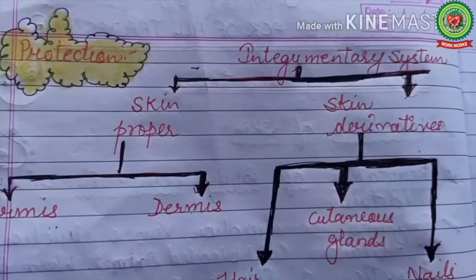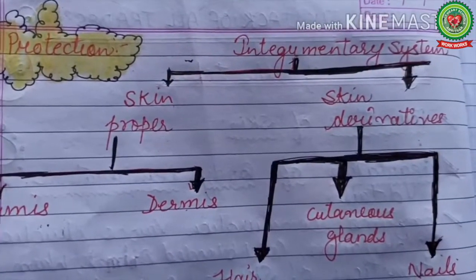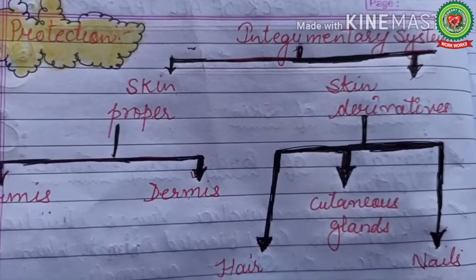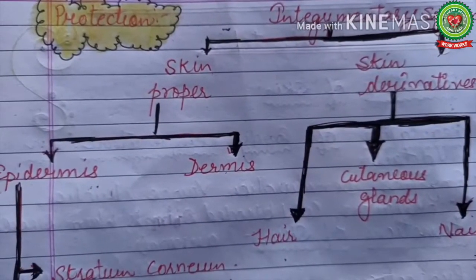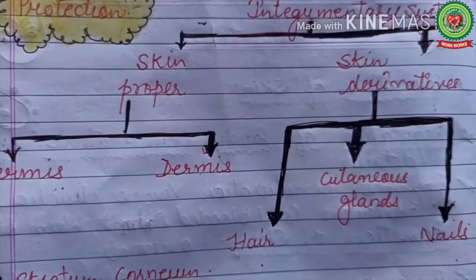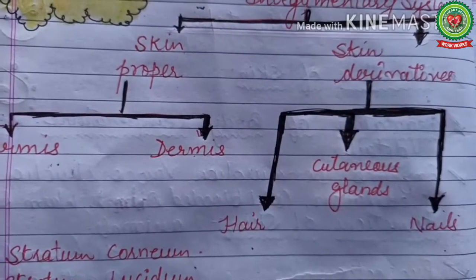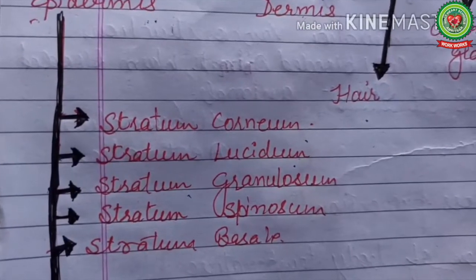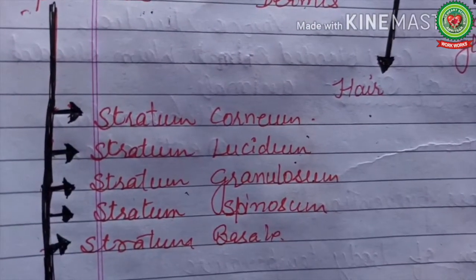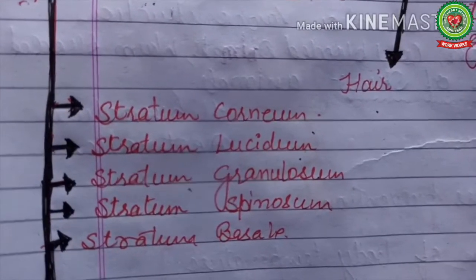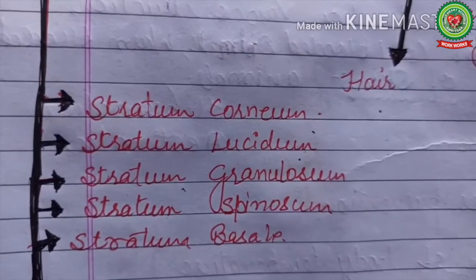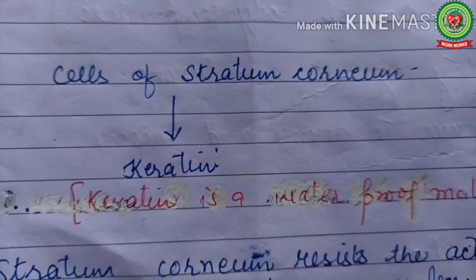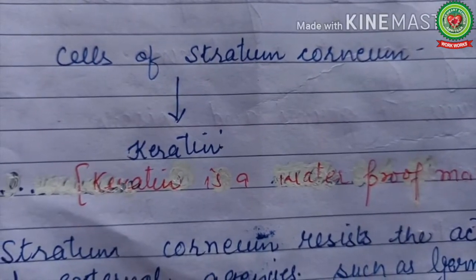Let's start with the very first function: protection. We have already studied the integumentary system, which contains skin proper and skin derivatives. Skin proper is divided into epidermis and dermis. The five layers of epidermis are stratum corneum, stratum lucidum, stratum granulosum, stratum spinosum, and stratum basale — with the shortcut CLGSB.